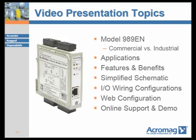The topics of this presentation include highlighting the differences between the commercial grade and the industrial grade models, featuring the applications, industries, or markets that could benefit from the products, overviewing the features, benefits, I/O connections, and web configuration for the units, and providing information for quick support along with a link to a live 989EN demo unit that can be accessed from the internet for viewing and demonstration purposes.